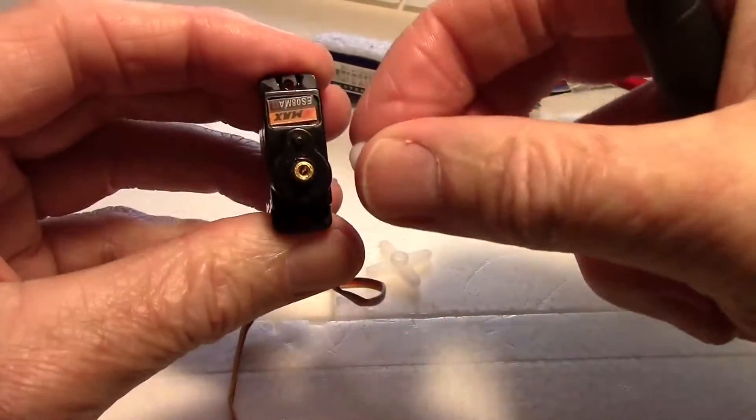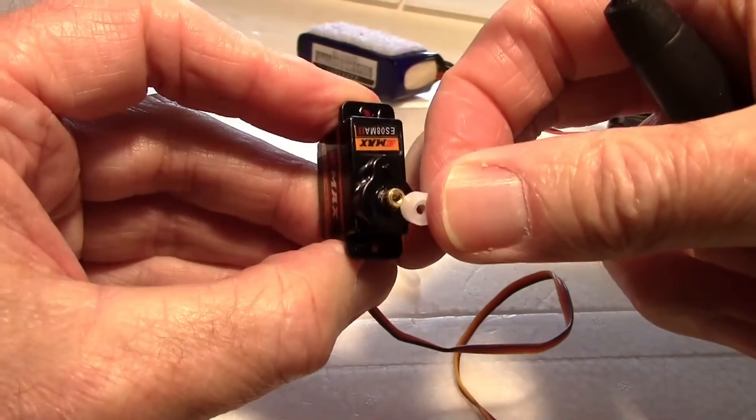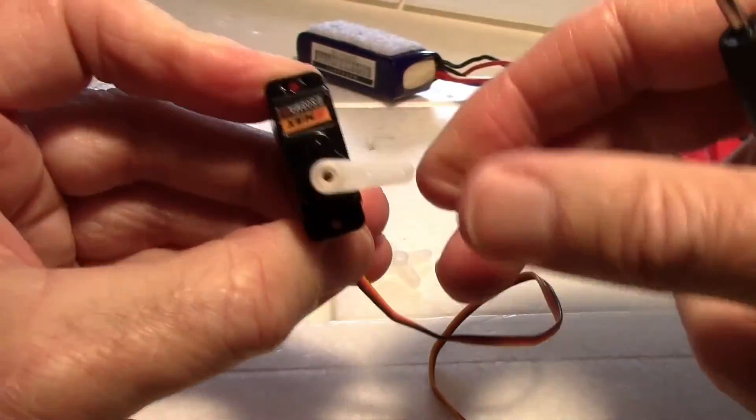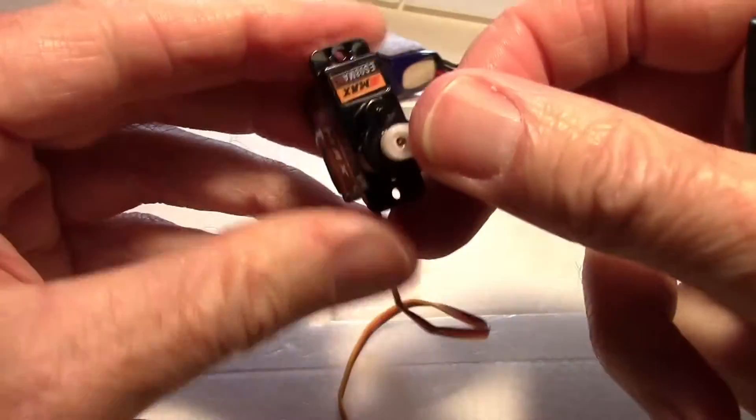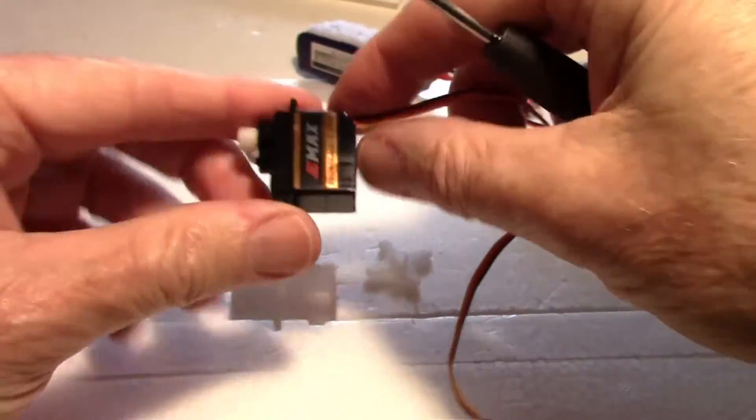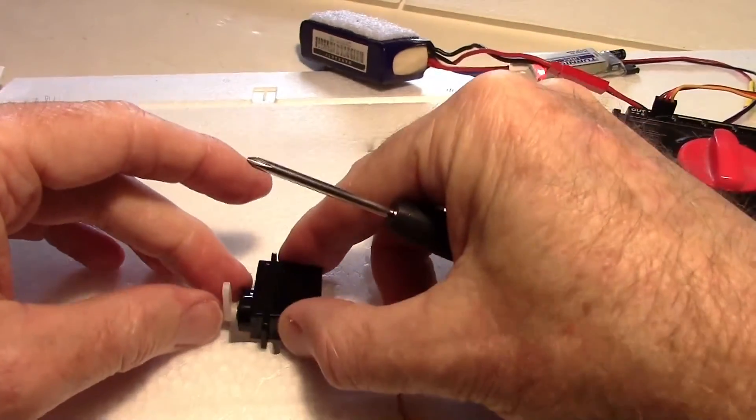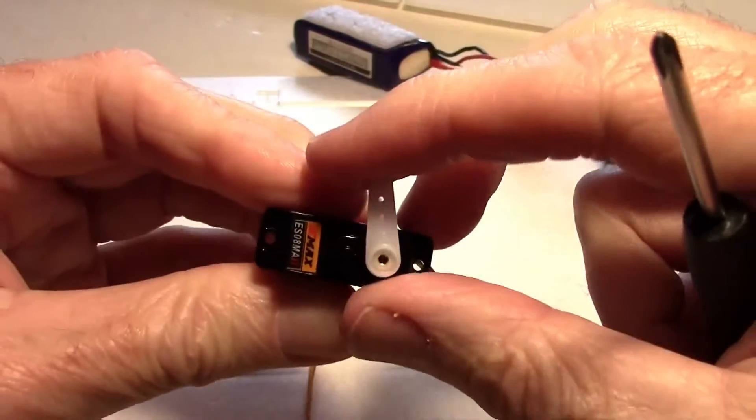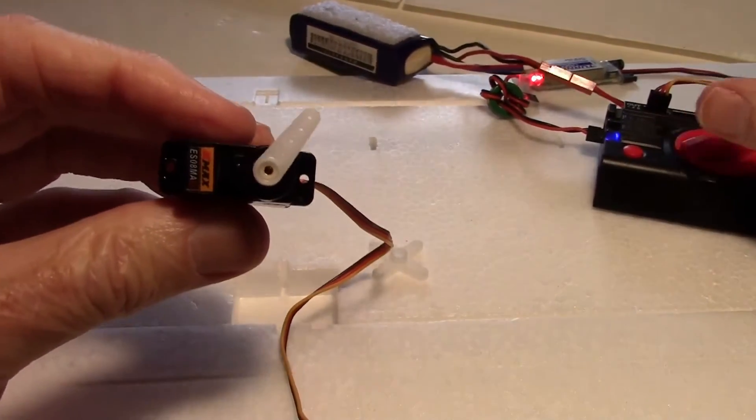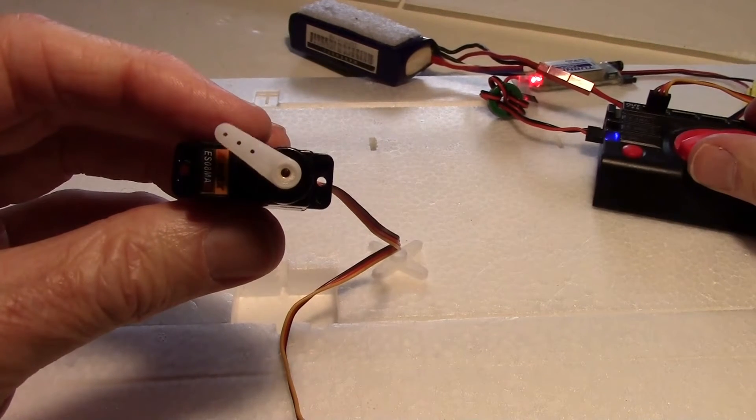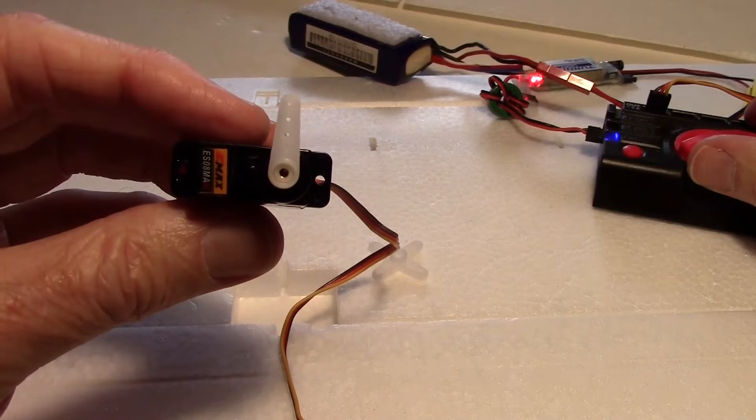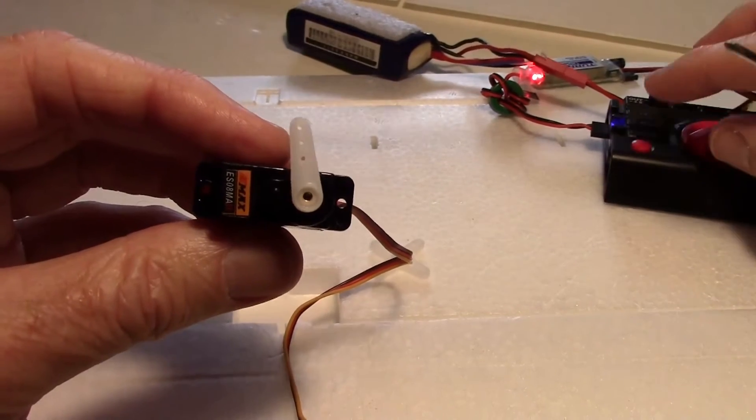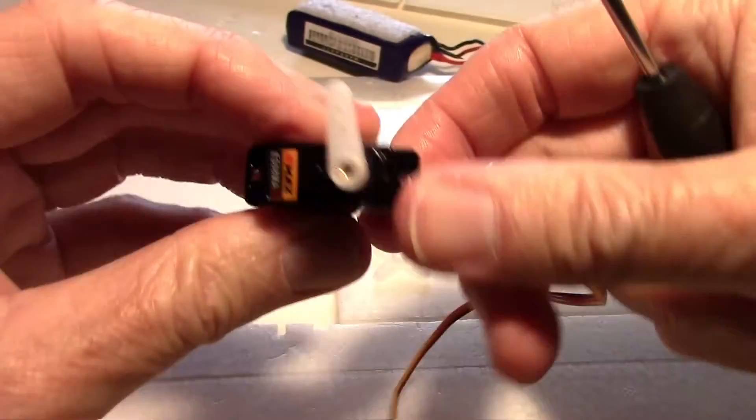So I just hooked it back to the servo tester. I don't want to take any chances and get it wrong. Now this time it looks like we have a choice of either going a little bit forward or a little bit backward. I think I'm going to go with a little bit towards the rear, like that. But that is the center. You can see it is a little bit backward, but those are the choices you have.